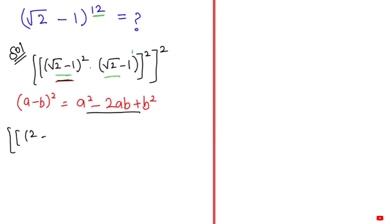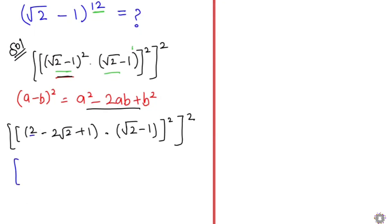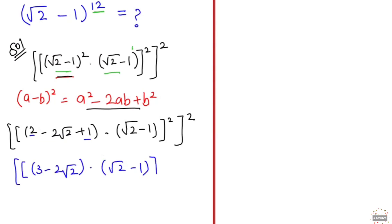This will turn to (2 - 2√2 + 1), which equals (3 - 2√2), times (√2 - 1), to the power of 2, and whole to the power of 2.